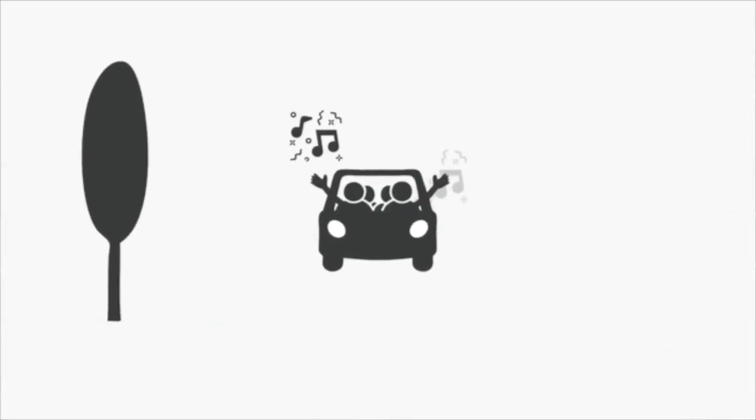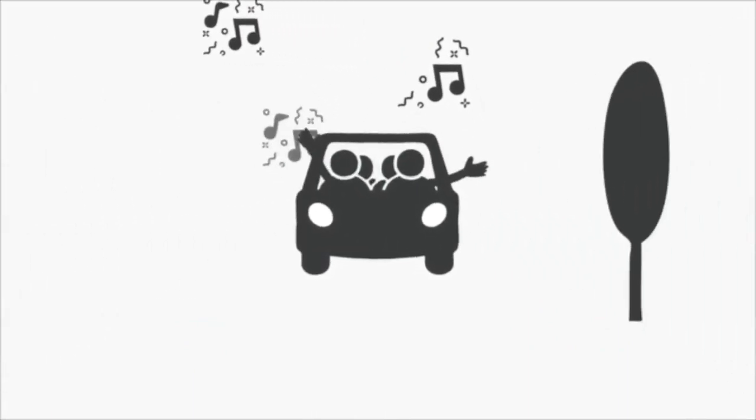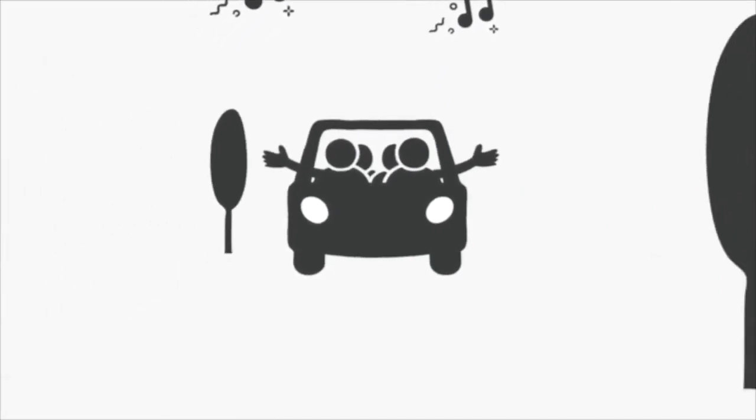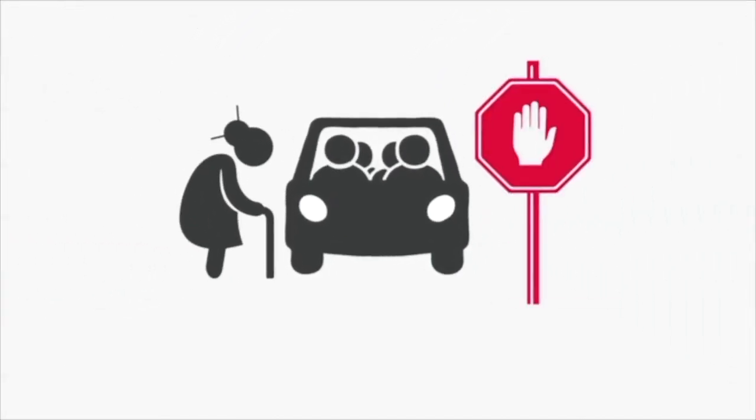For example, even though we know driving too fast is dangerous, adolescents are more likely to do it, especially when they're with friends. This leads to real danger. Drivers under the age of 25 are more likely to have a serious accident when they're with others their age.